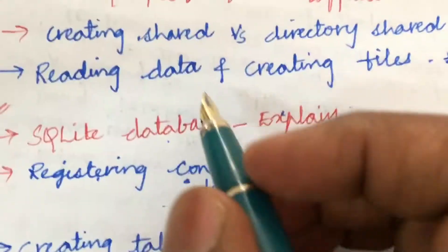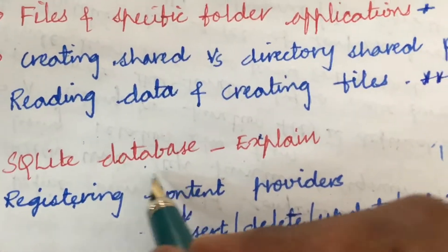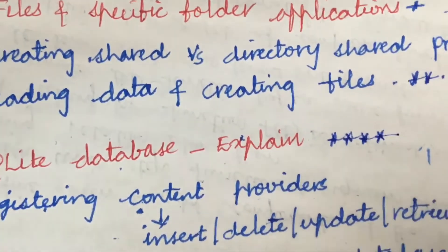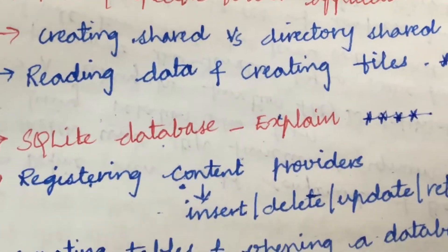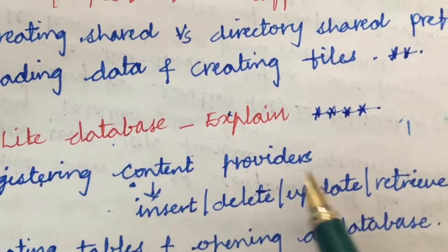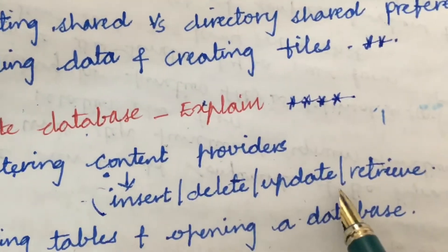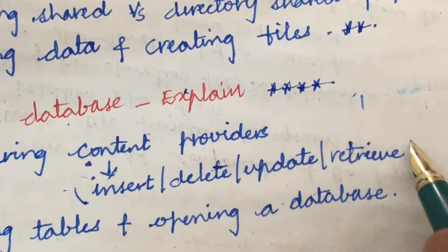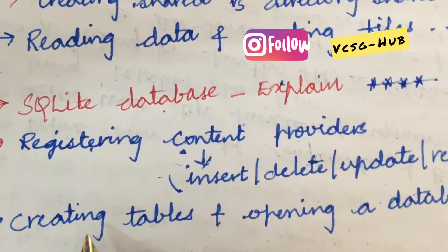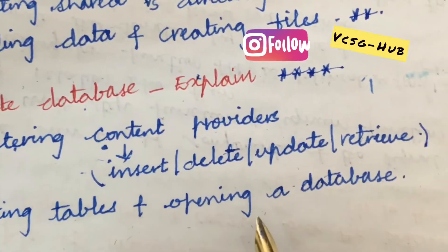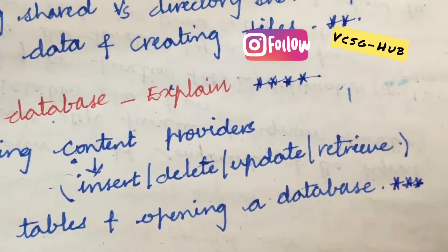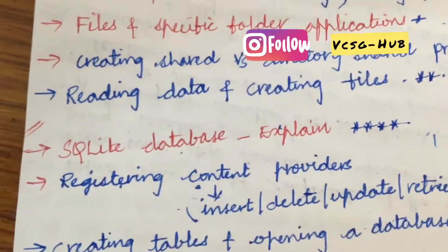The gunshot question may be: explain the SQLite database — this may be the last question, from which you will be getting A as well as B. Explain registering content providers with respect to insert, delete, update, and retrieve — this may be a 5-mark question. Later, explain creating tables and opening a database. These are all the very important questions, dear students, which I have taken into consideration.